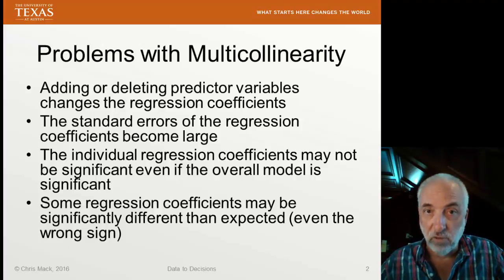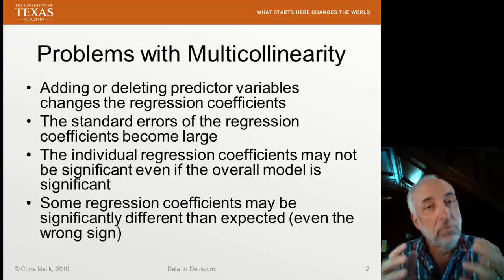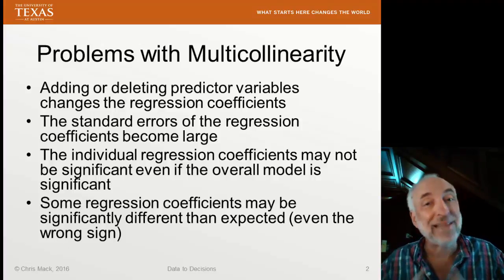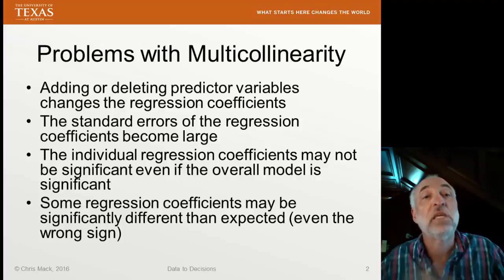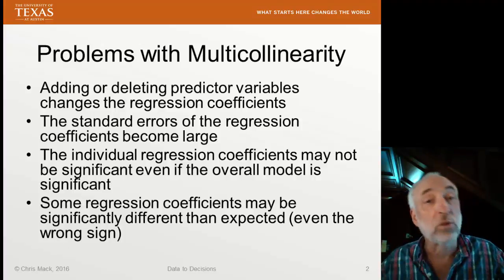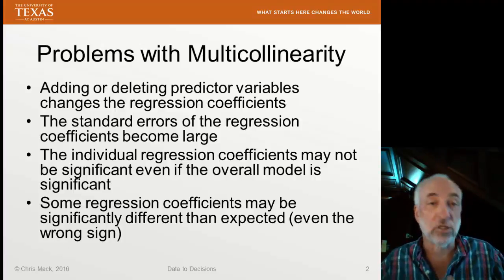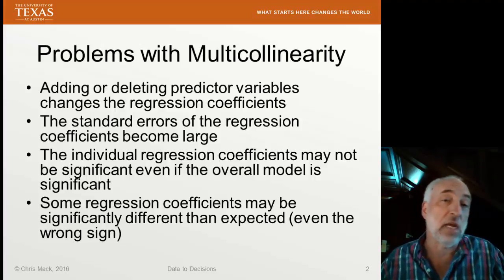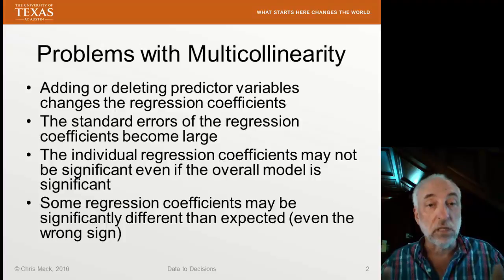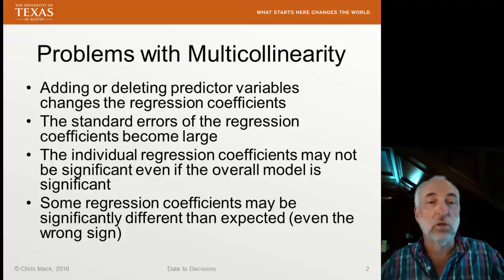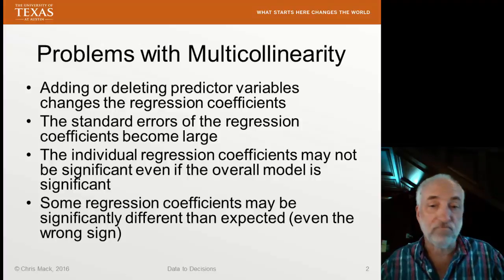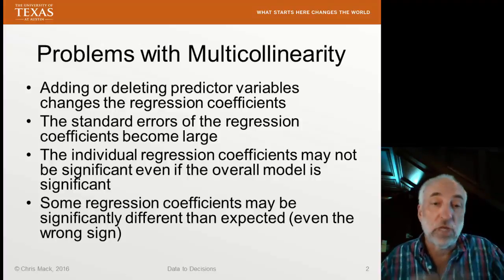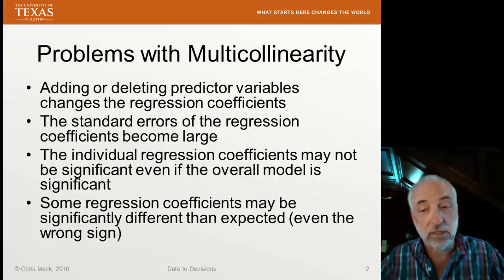I want to emphasize, as I've said before: this is a problem with interpreting the meaning of the coefficients. It's not necessarily a problem if the only thing that's important to you is making predictions with this model, because it's going to fit the data and allow predictions just as easily with multicollinearity as without, as long as the collinearity remains constant — it doesn't change over time or from one data set to the next.